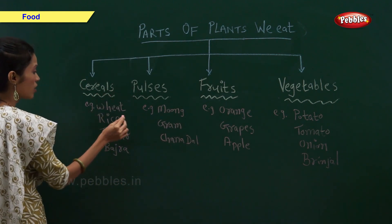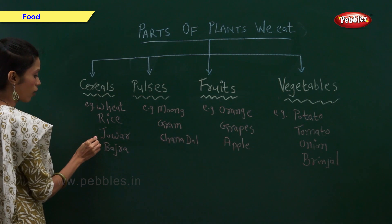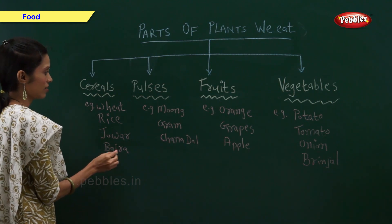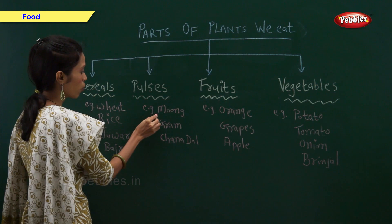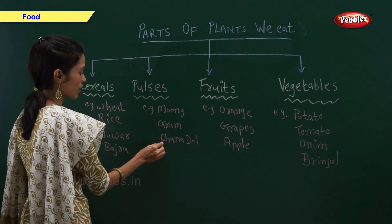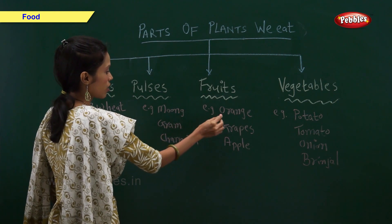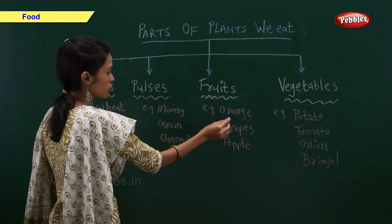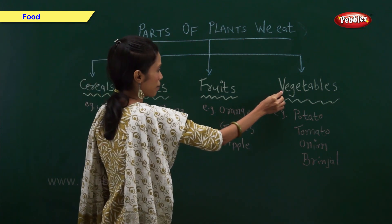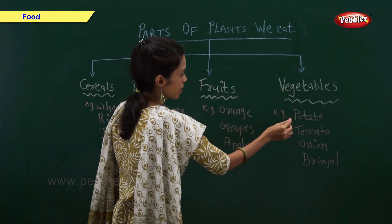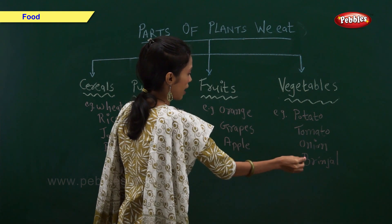So, examples of cereals are wheat, rice, jowar, and bajra. Examples of pulses are moong, gram, and chana dal. Examples of fruits are orange, grapes, and apple. Examples of vegetables are potato, tomato, onion, and brinjal.